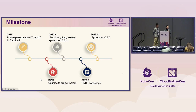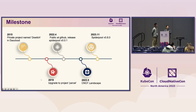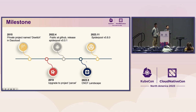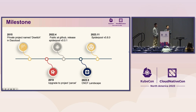Here is the milestone of SpiderPool. We had a private project in 2015, which was initially called the MacVLAN CNI. In 2019 we upgraded the project to include Calico CNI and VLAN CNI. In 2022 we published SpiderPool on GitHub and had the first release. Now we have released version 0.8.8. That covers the milestones of SpiderPool — the scenarios and why we built it. Next we'll show the architecture and features of SpiderPool.